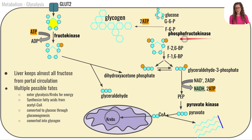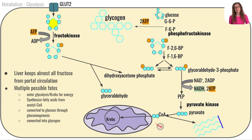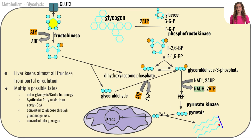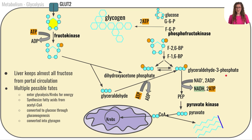Since fructose enters after the phosphofructokinase step — which is heavily regulated based on the energy status of the cell — there is a greater potential for fructose to be converted all the way down to acetyl-CoA regardless of energy status, with this buildup of acetyl-CoA going toward lipogenesis. Also, the glyceraldehyde from fructose has a phosphate added to become glyceraldehyde-3-phosphate, where it continues down through the rest of glycolysis.